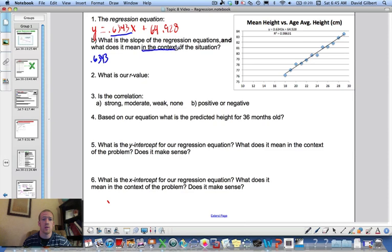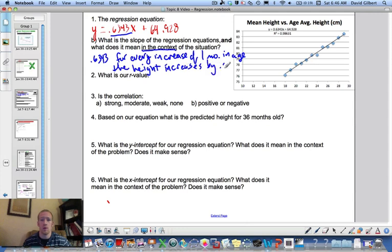And what does it mean in the context of our equation? That means for every increase in the x, we have this many units increase in y. So for every increase of one month in age, the height increases. So the average height of our individuals increase by 0.6343 centimeters. Basically they grow 0.63 centimeters per month.